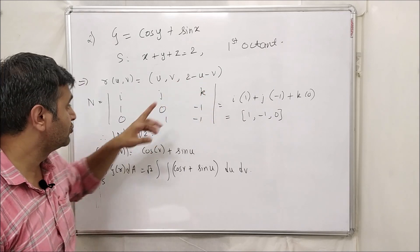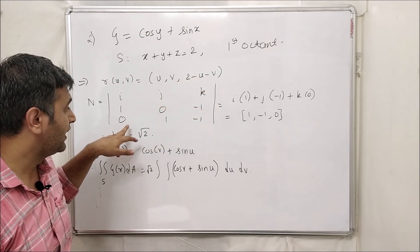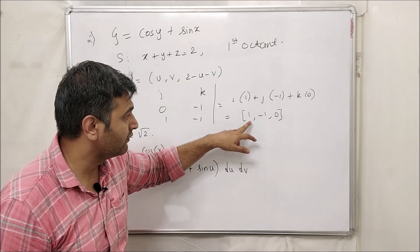Now obviously it's a plane, so you take x equal to u, y equal to v. So from this relation your z will be 2 minus u minus v. So you find the normal vector ijk, r with respect to u 1 0 minus 1, r with respect to v 0 1 minus 1, and you find the normal vector you have 1 minus 1 0.